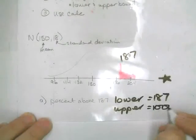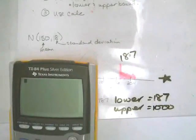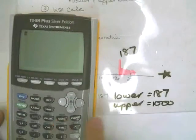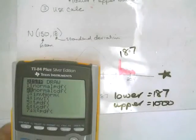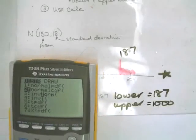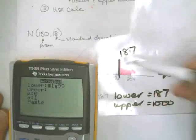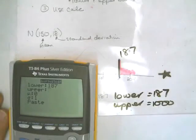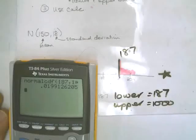Once you know your upper and lower bounds, you can use your calculator. Hit the distribution button — that's second, then VARS — and choose number 2, Normal CDF. If your calculator is updated it will take you through some questions. My lower bound is 187, my upper bound is 1,000, mu is 150, and sigma is 18. Enter that, and I get 0.0199.